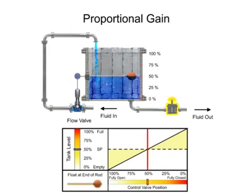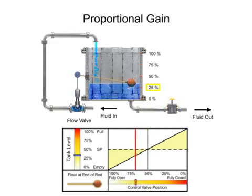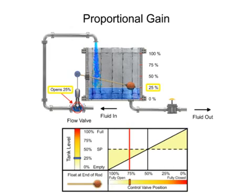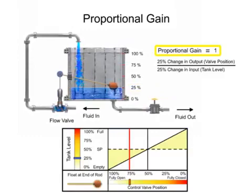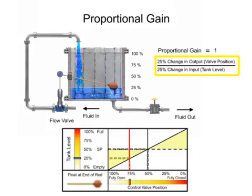Opening the drain valve increases the load demand, which causes the tank level to drop by 25%. The float drops and the valve opens 25%, which allows more fluid flow to enter the tank. A gain of 1 is demonstrated in this mechanism since the 25% change of input, or tank level, results in a 25% change of output, or valve position.